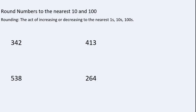Hello everyone. In this video, I'm going to explain how to round numbers to the nearest tens and to the nearest hundreds. Rounding numbers is defined by the Cambridge Dictionary as increasing or decreasing to the nearest ones, tens, or hundreds.